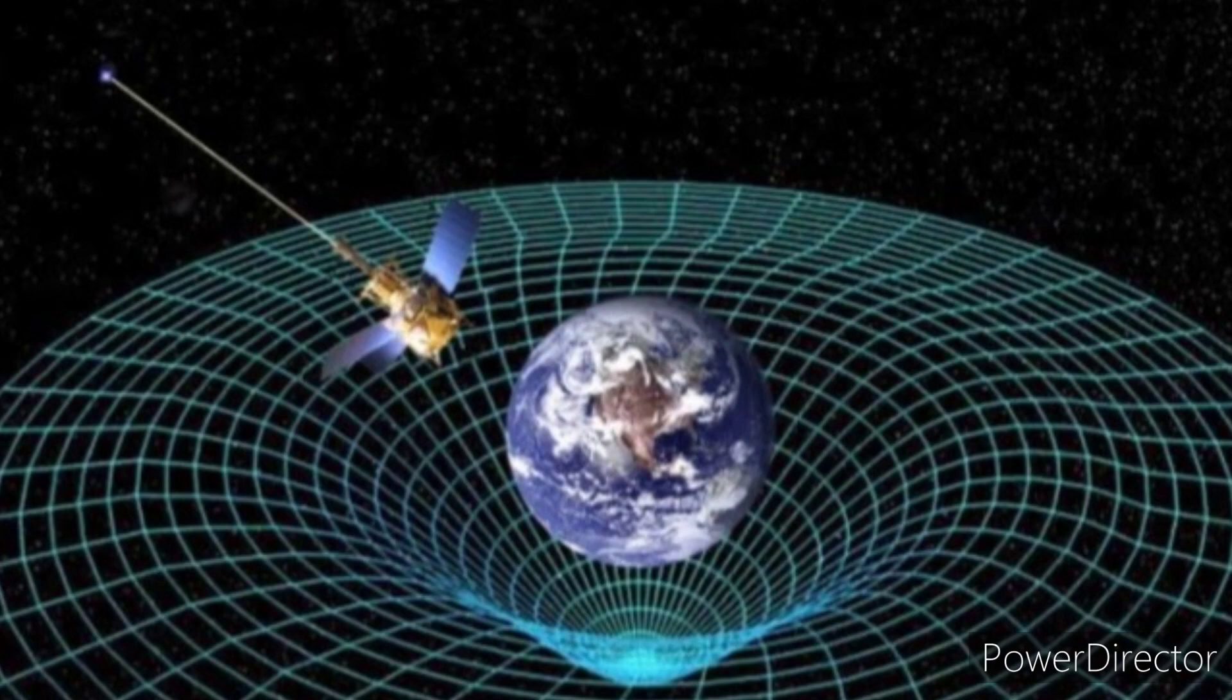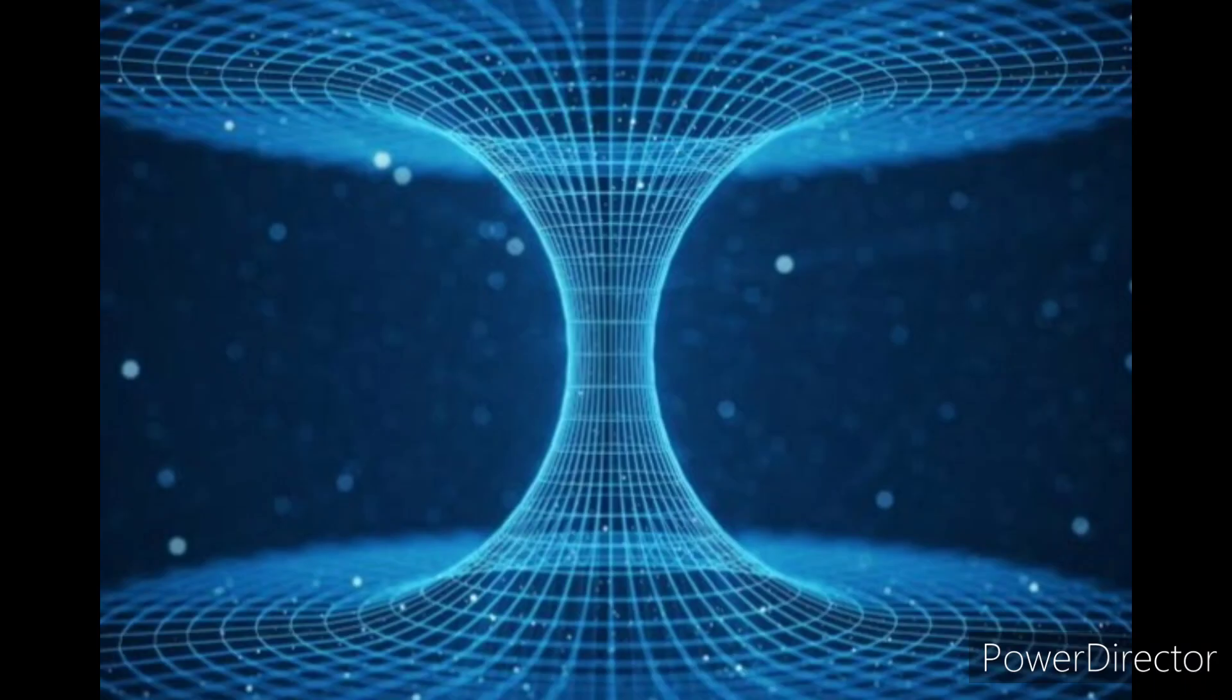So, if Einstein's theory of relativity was a picture, I would say it would be this. You probably get what I mean, because understanding Einstein's theory of relativity is the first big step for understanding wormholes. If you did understand, you passed level 1.